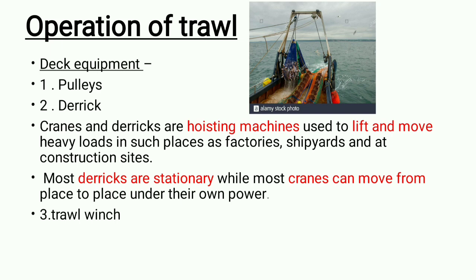The main difference between cranes and derricks is that while they are similar, cranes have a hoisting machine mainly used to lift, move, and carry heavy loads in places like factories, shipyards, and construction sites. The key difference is that derricks are stationary while cranes can move from place to place under their own power.